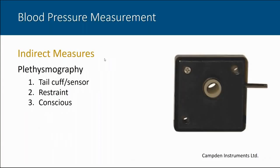Indirect methods for measuring systemic arterial pressure involve plethysmography — the use of a tail cuff inflation device to occlude blood flow within the tail of a rodent, along with a sensor that detects when pressure within the vascular system exceeds cuff pressure, noting when systolic pressure is detected. In order to make these measurements, the animal has to be restrained and cannot move around the cage. However, the animal can be conscious, so we don't have to anesthetize it. It's a minimally disruptive procedure requiring Animal Care and Use Committee approval, but it is not painful and is minimally distressful.